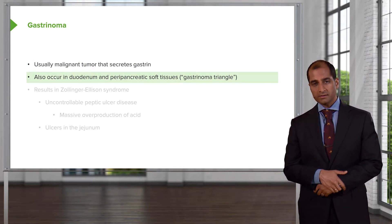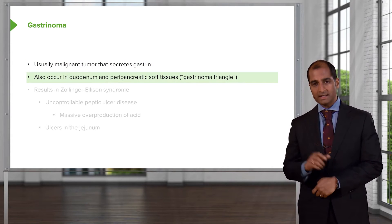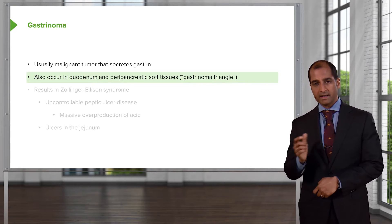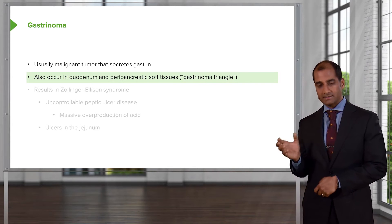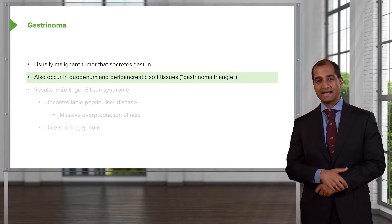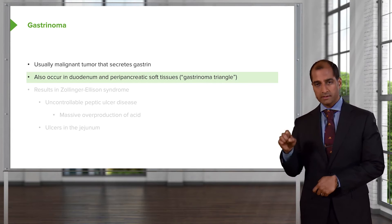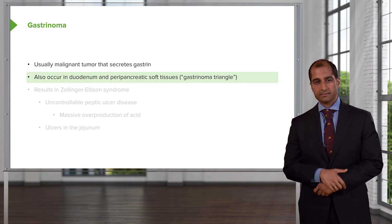It may also occur in the duodenum — keep that in mind — or in the peripancreatic tissue. You call this the gastrinoma triangle, right around that area of the pancreas.